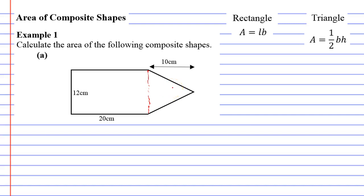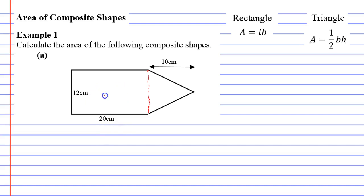If we want to find the area of the following composite shape, we need to find the area of the rectangle and triangle at separate times and then add them together at the end. So what we'll do is we'll call the rectangle shape 1 and we'll find the area of shape 1. And shape 2 is the triangle, so we'll find the area of shape 2.